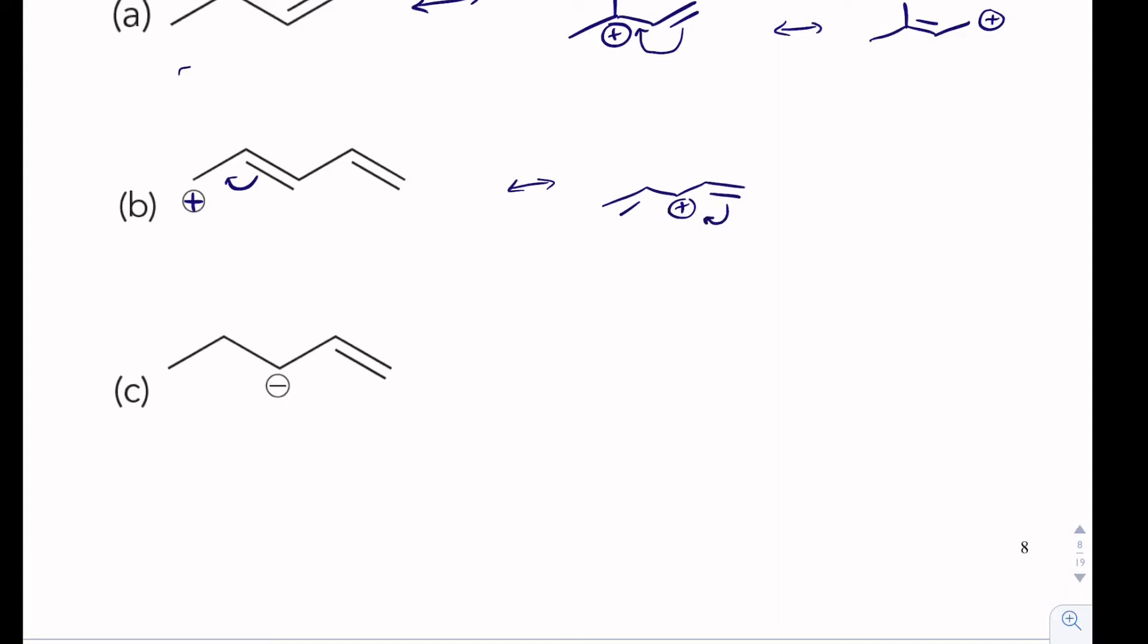And then we can actually do that again. I'm going to draw the arrow like that. And so overall, we get something like this. Negative charges, on the other hand, are electrons. Positive charges are the absence of electrons.